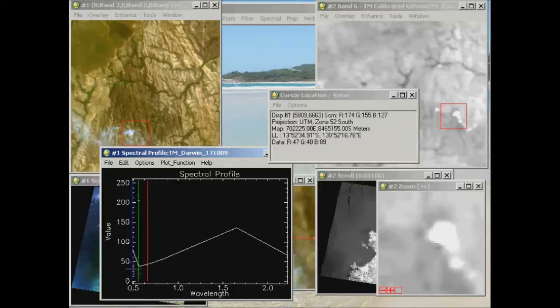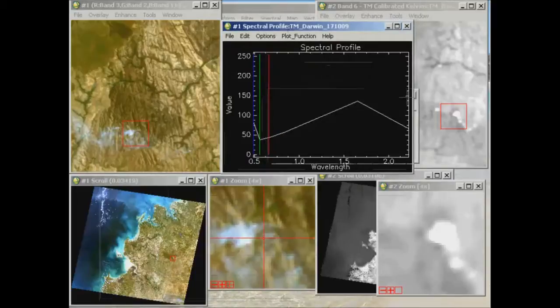So in the first band it's being displayed as blue, the second as green, the third as red. And this is what we call a spectral signature.